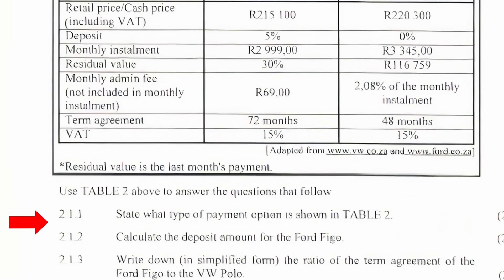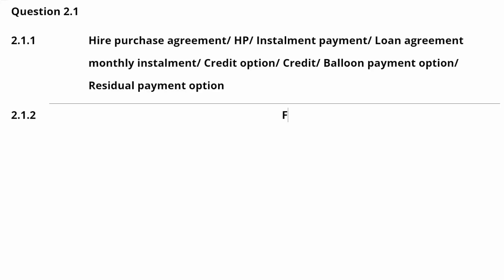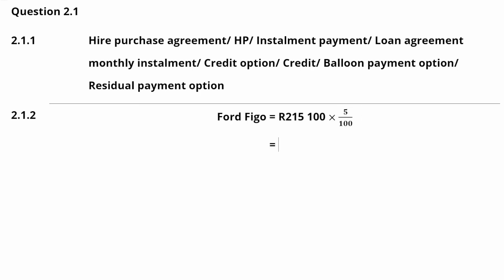Question 2.1.2: Calculate the deposit amount for the Ford Figo. From Table 2, the deposit is listed as 5% of the retail price of R215,100. So, the deposit for the Ford Figo is R215,100 × 5/100, which gives us a value of R10,755.